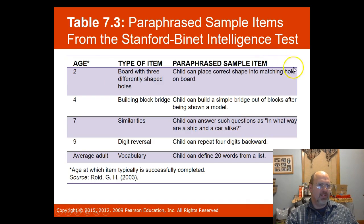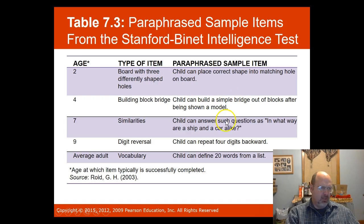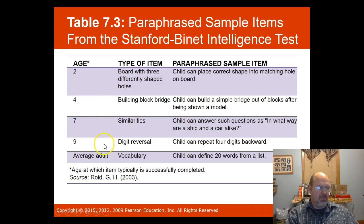Here are some items from an IQ test. A child can place the correct shape into a matching hole on a board. A child can build a simple bridge out of blocks using a model shown. These are age-appropriate activities to measure a child's intelligence.